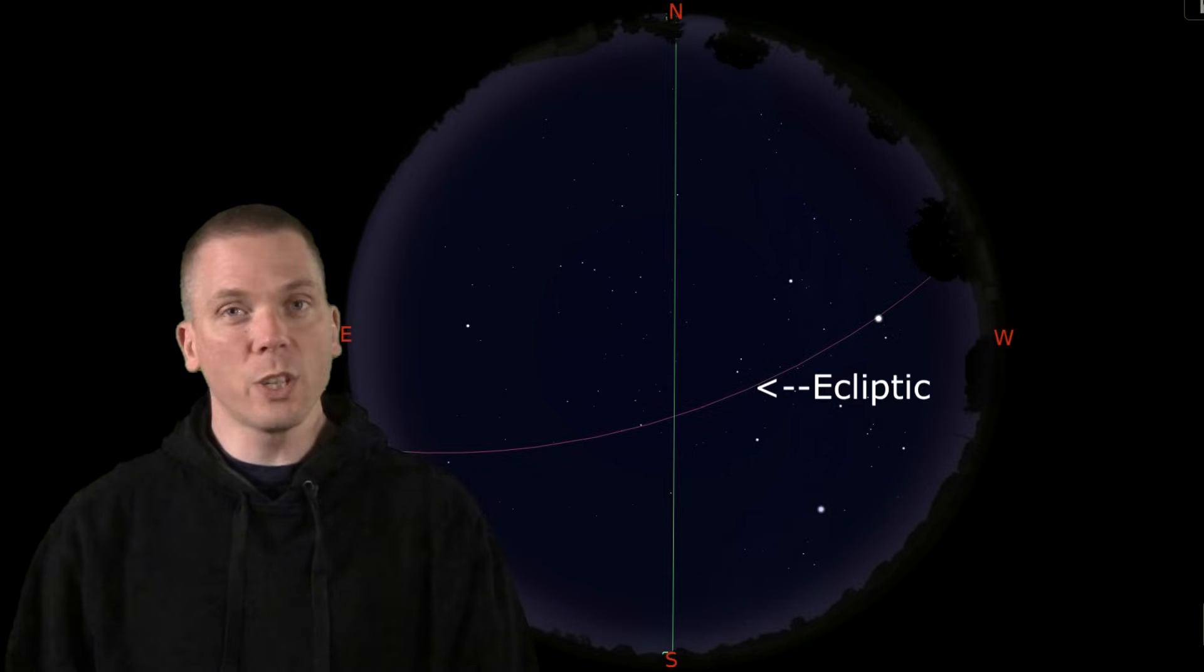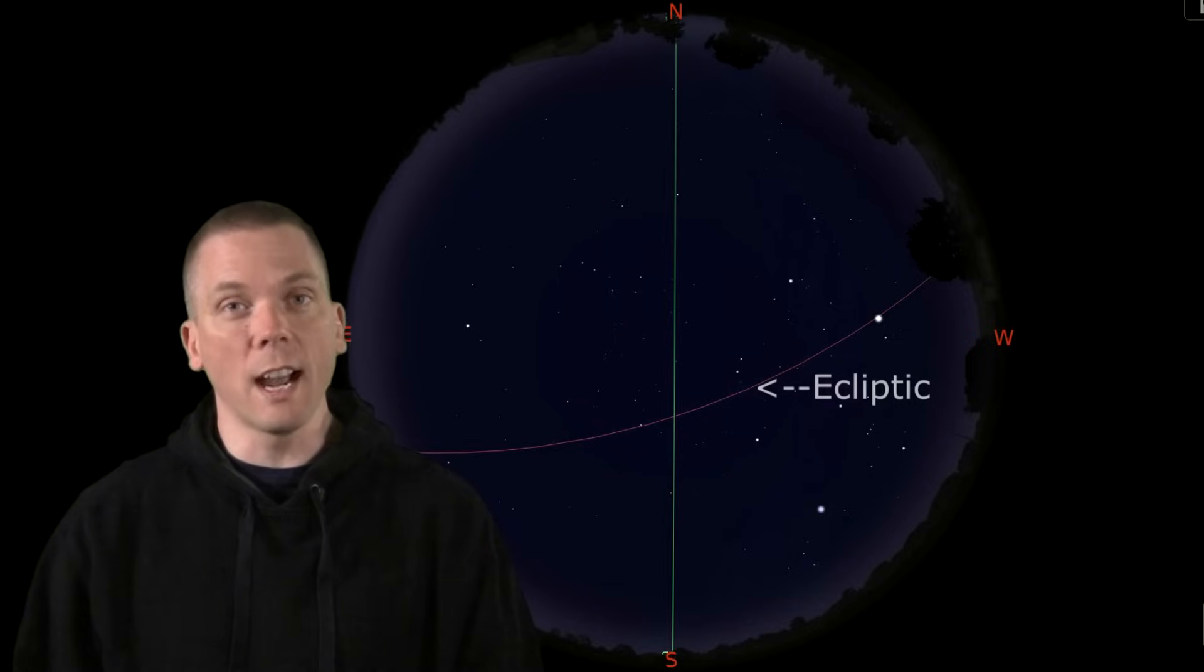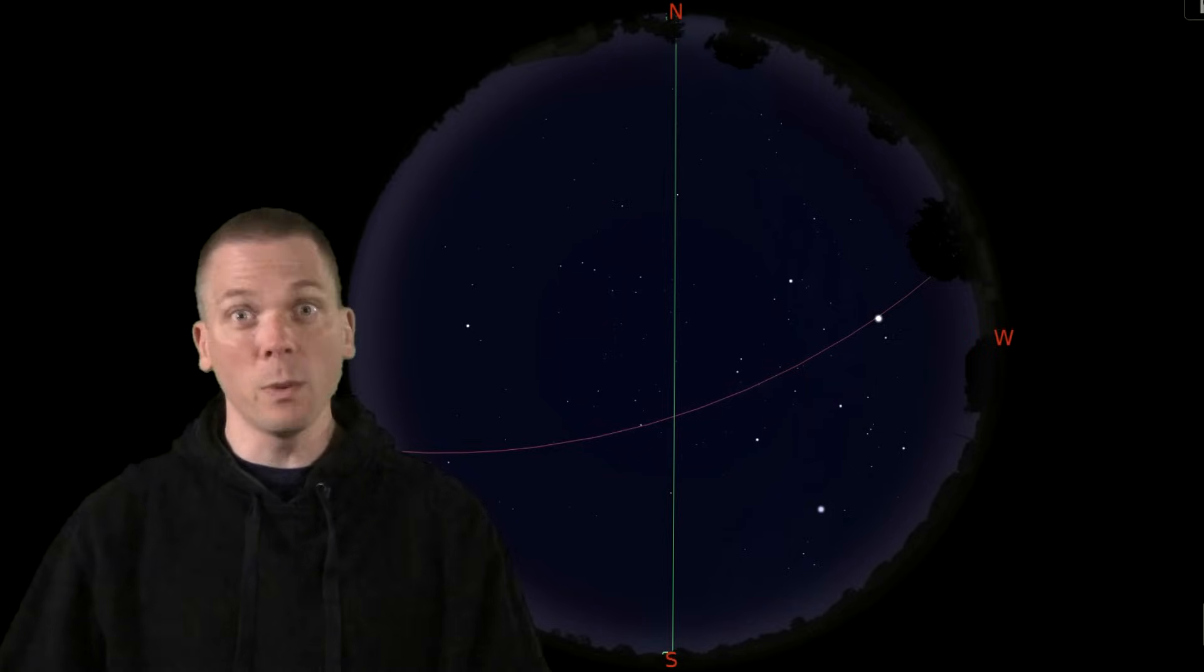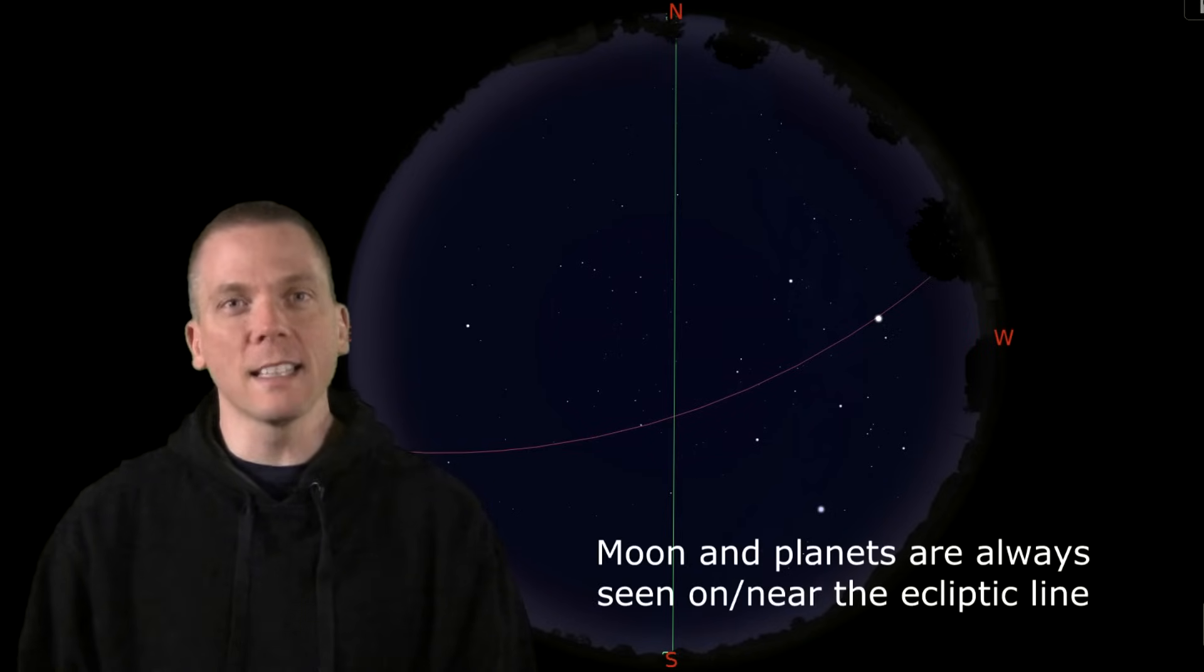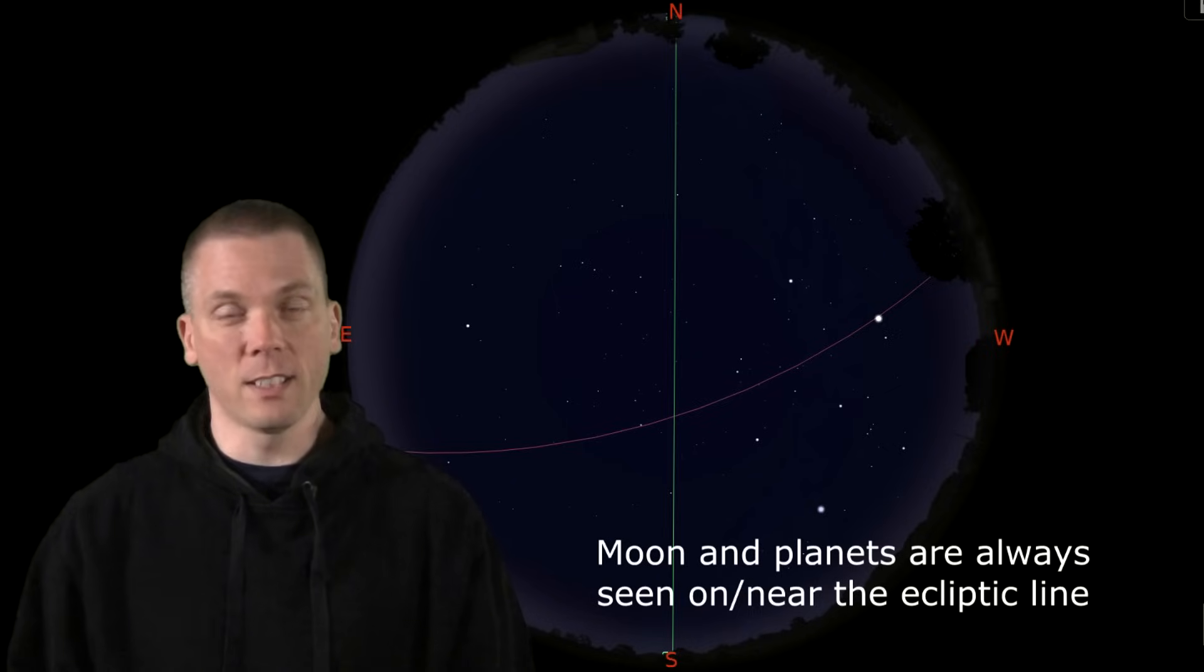Since the planets in our solar system orbit our star largely on the same plane as each other, kind of like a giant pizza with the sun in the middle, the path of the moon and planets in the sky closely follows this line of the sun.